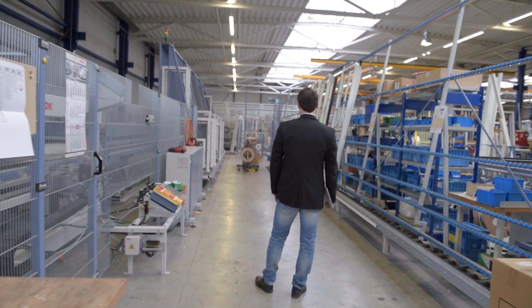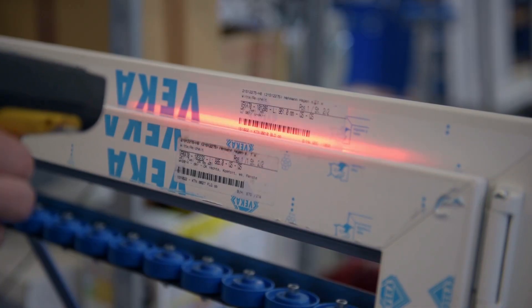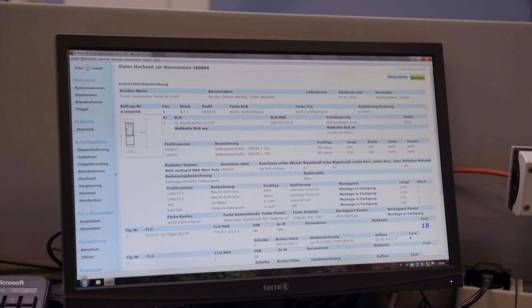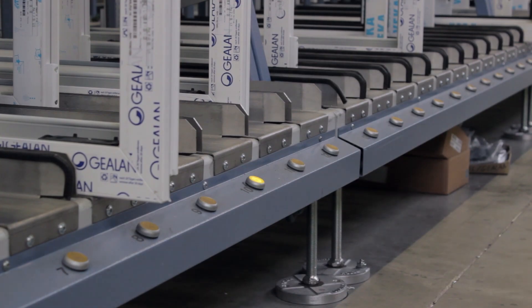The sash hanging. In order to place each sash into the associated frame, a scan on the frame is sufficient. Glass sends the data to the machine, which then displays the appropriate sash to the employee.